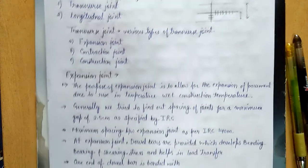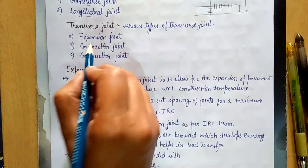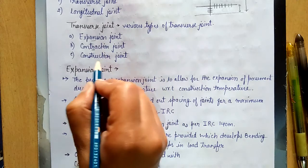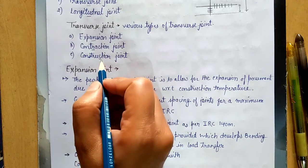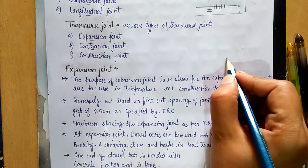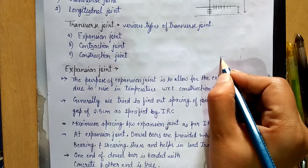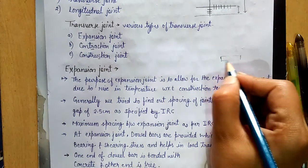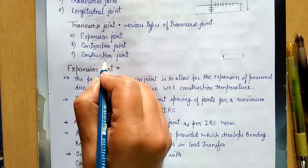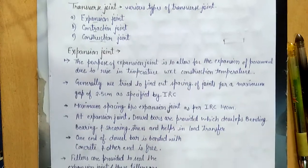Transverse joints are of three types: expansion joints, contraction joints, and construction joints. The construction joint is provided at the end of a day's work to mark where construction stopped and where the next phase will begin.